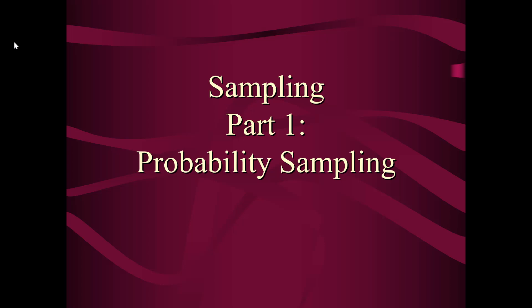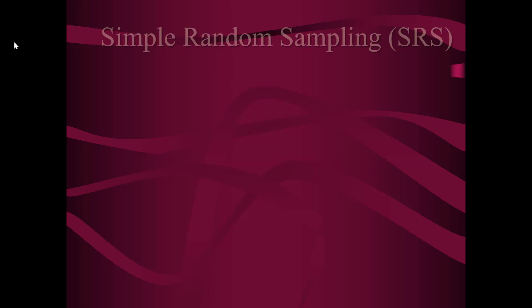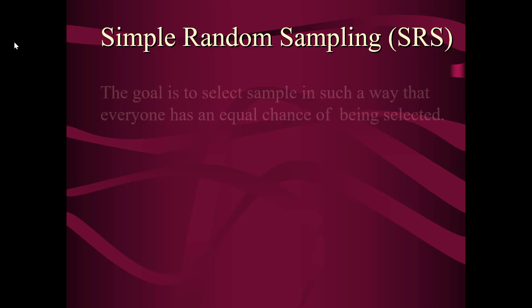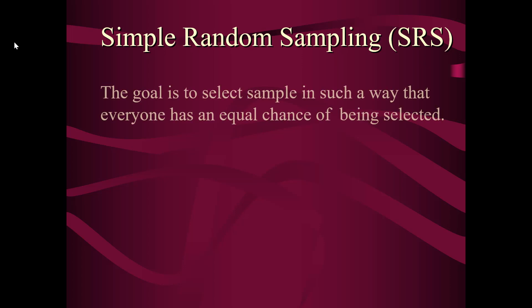Hi everyone and welcome to the video on sampling. This is part one, probability sampling. The first type of random sampling I want to go over is called simple random sampling. The goal of SRS is to select a sample in such a way that everyone has an equal chance of being selected.